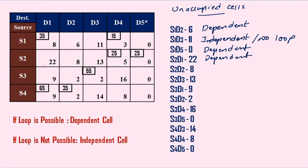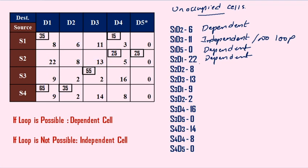Next: S2, D2. Let us check whether S2, D2 has a loop. Going right, then left, down, right — a complete loop is formed. The loop is not in the form of a square or rectangle; it is a step-wise loop. So S2, D2 is having a loop — it is dependent.